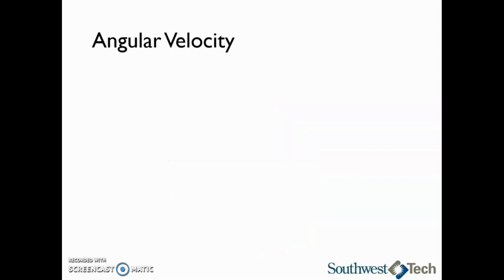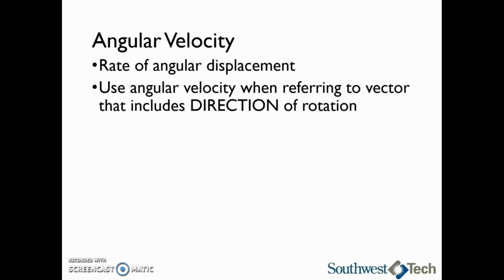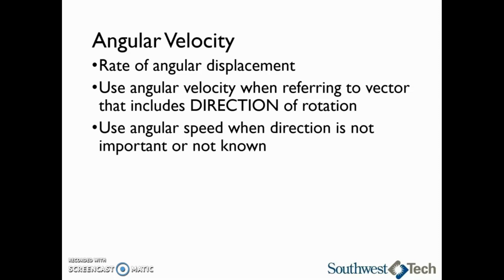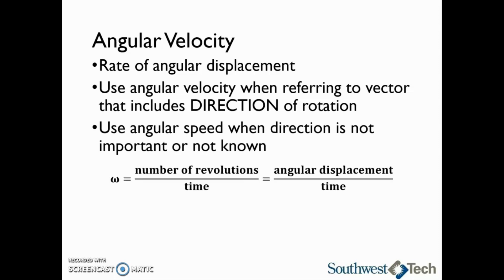Next we will discuss angular velocity. Angular velocity is simply the rate of angular displacement. We need to use angular velocity in cases where we are referring to a vector that includes or indicates a direction of rotation. If the direction of rotation is not important or not known, then you can use angular speed. The angular velocity, omega, is found by taking the number of revolutions divided by the time, or by taking the angular displacement divided by the time.